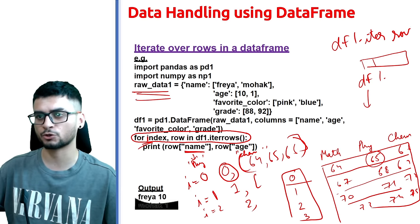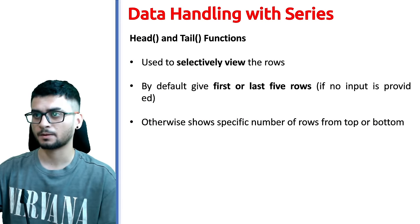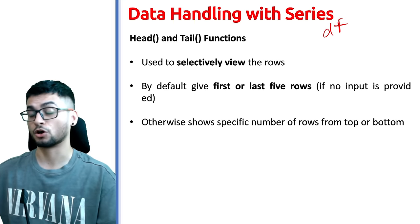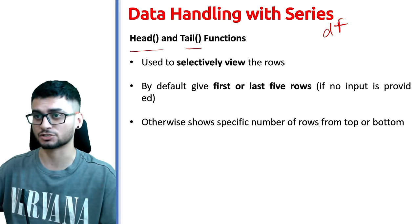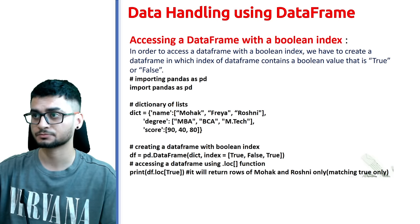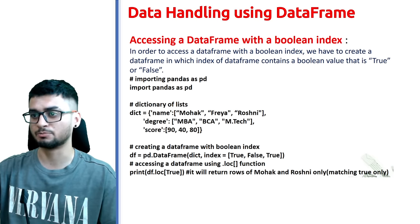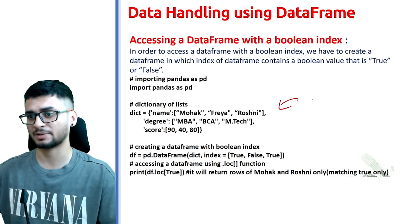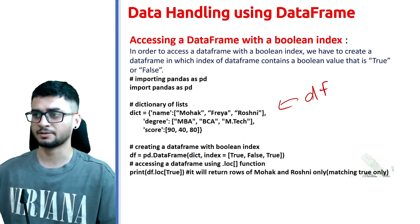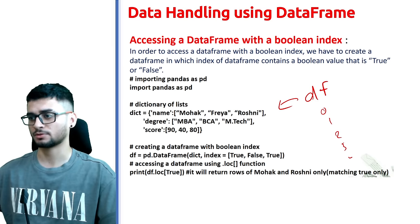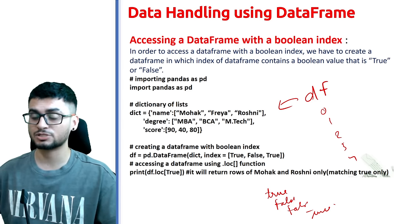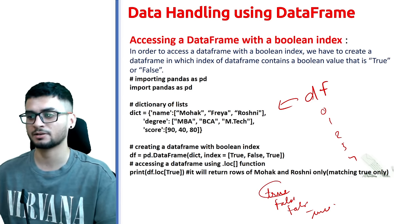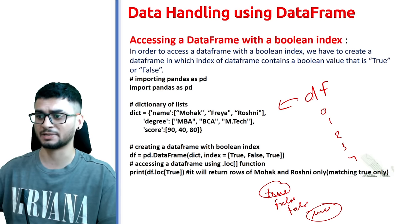In a DataFrame with many columns and rows, you can also use the head() and tail() functions, similar to series. There is also something known as a DataFrame with boolean index — where instead of the default 0, 1, 2, 3, 4 index, you replace it with True and False values. If you want to see only the rows where the index is True, this boolean indexing helps you do that.